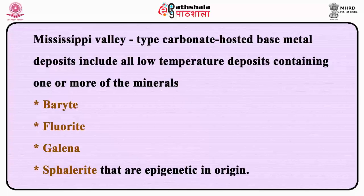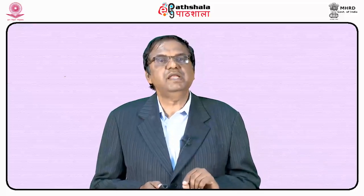Ashok Mukherjee in 1999 provided salient features of these three types. Mississippi Valley type carbonate-hosted base metal deposits include all low-temperature deposits containing one or more of the minerals barite, fluorite, galena, and sphalerite, that are epigenetic in origin. These deposits occur principally in unfolded limestone or dolostone unconformably overlying highly deformed and metamorphosed basement. The host rocks with brittle fractures, domes, and gentle warping register evidence of mild deformation.